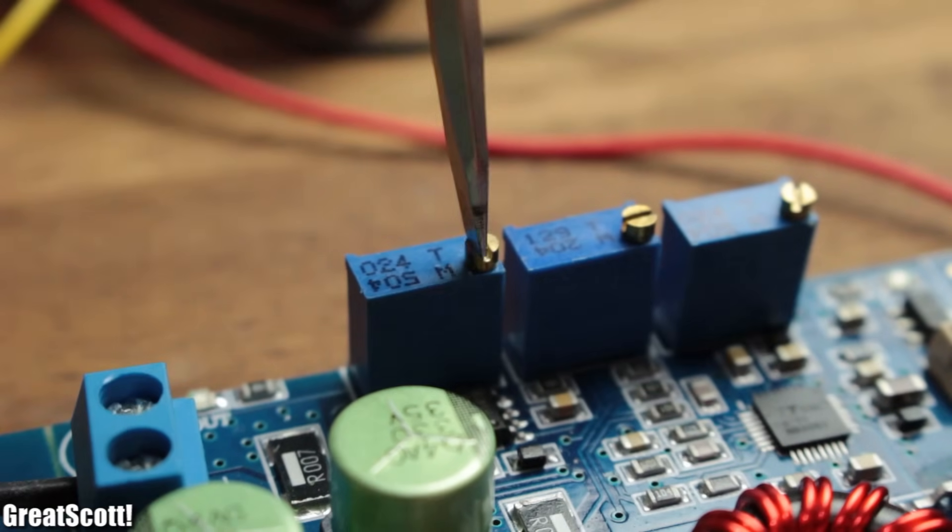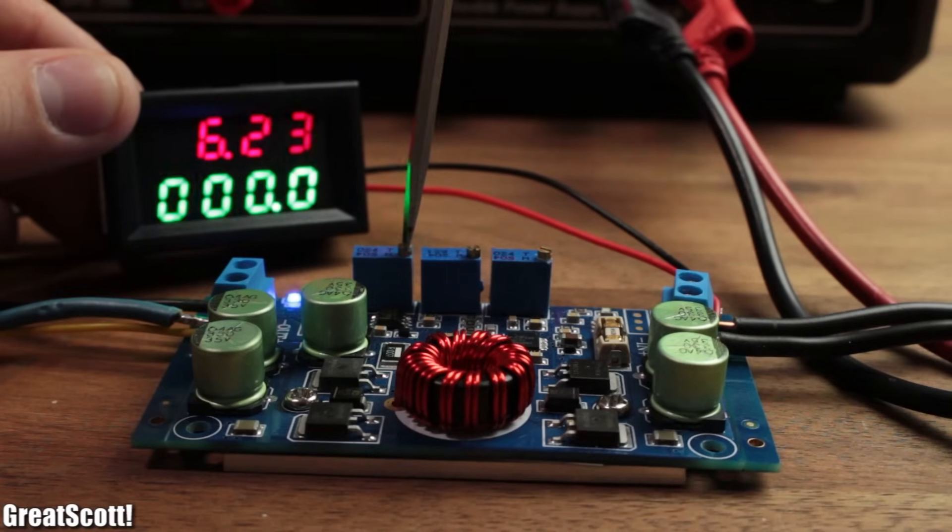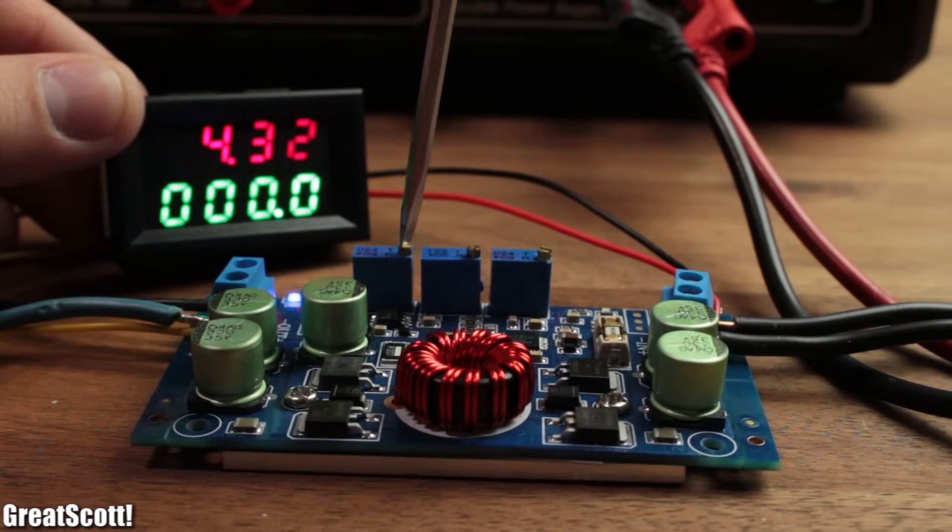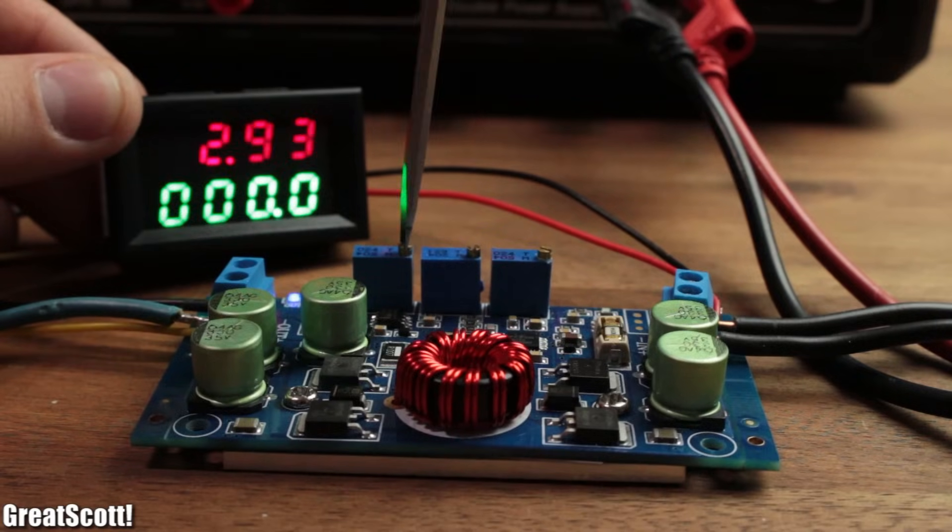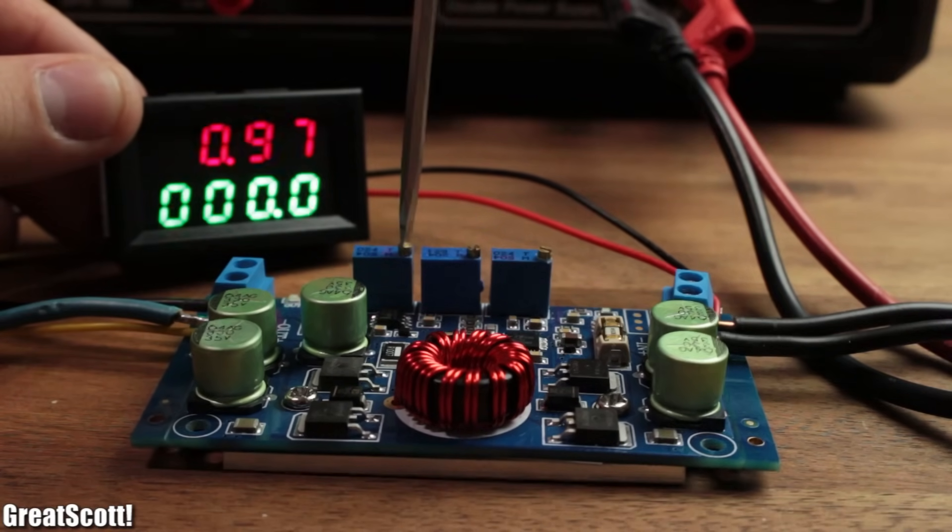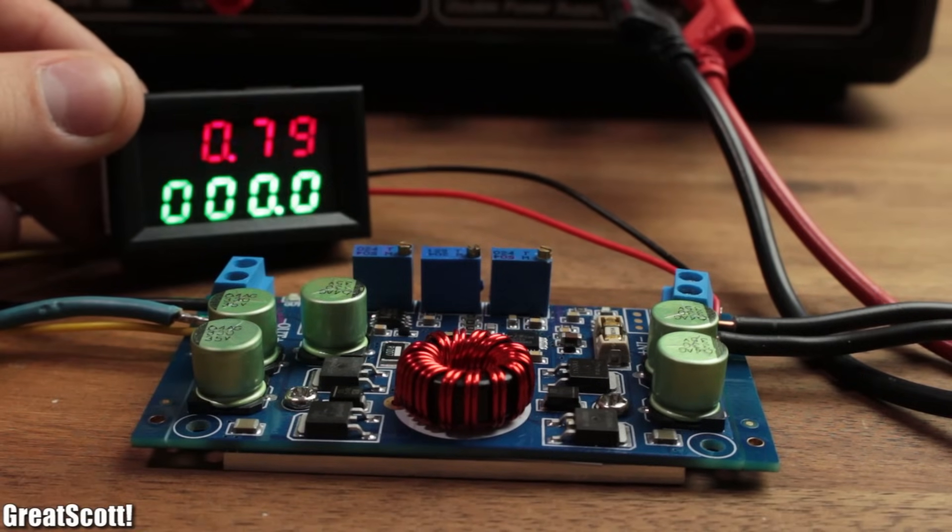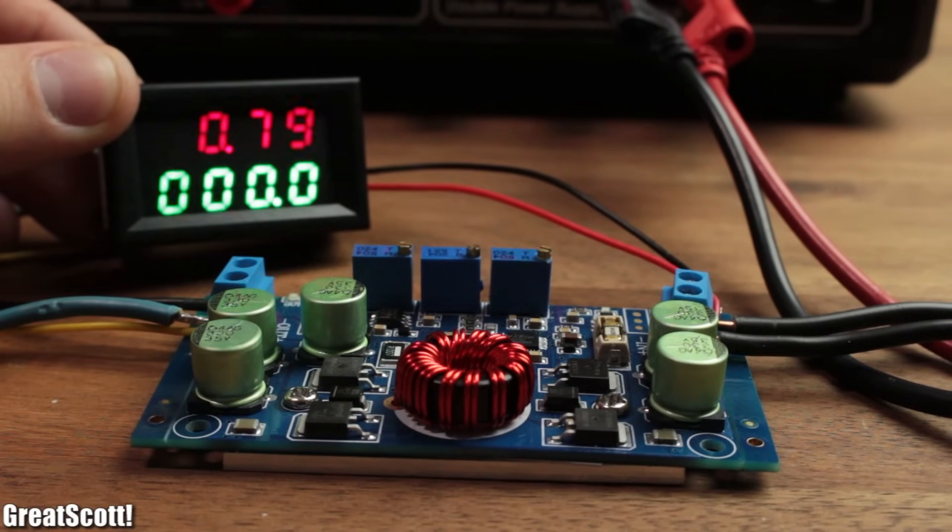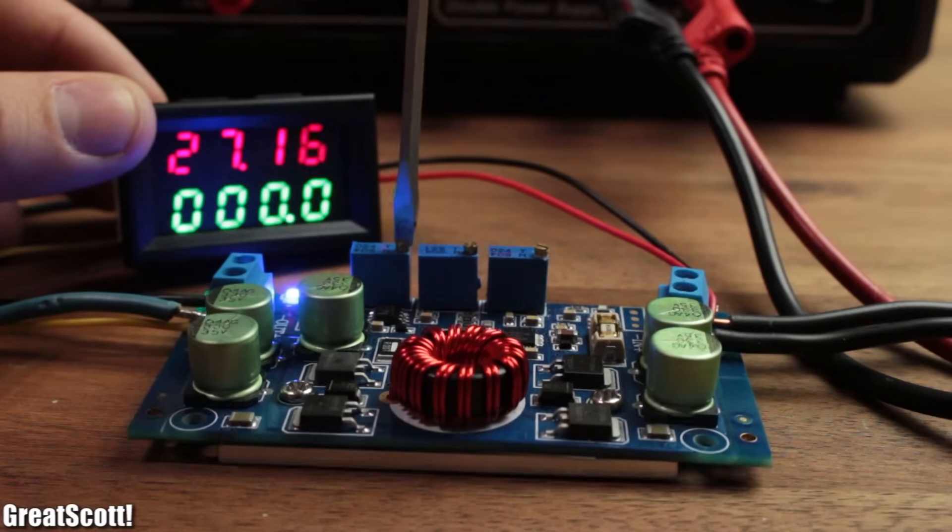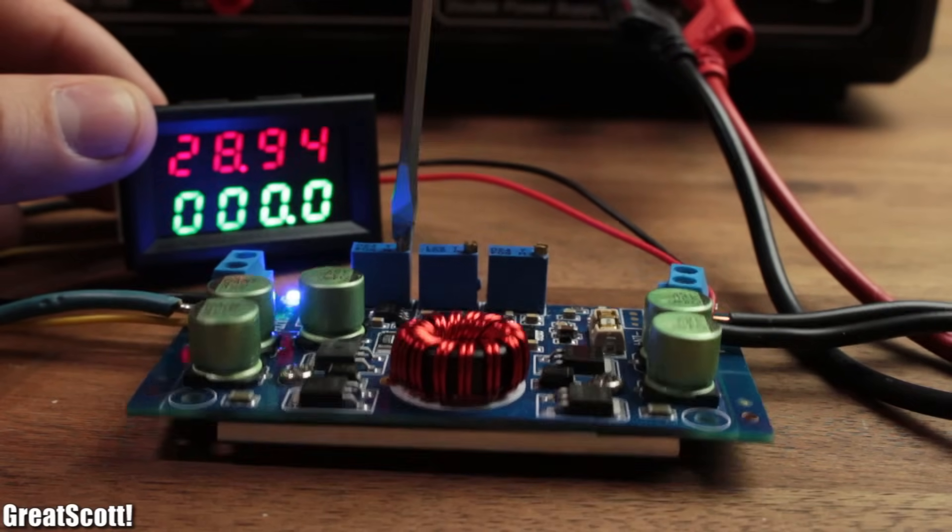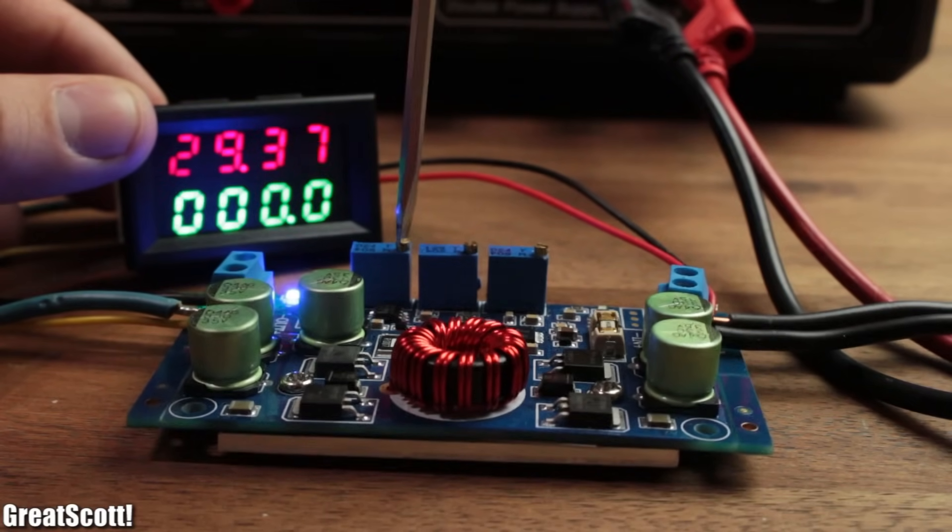The far left one controls our voltage. The minimal voltage is not 0 volts, but it's very close with 0.8 volts. It's not a tragedy that we cannot reach below 0.8 volts, because such low voltage values are not that useful anyway. The maximum voltage is around 29.4 volts, so I would say it's a pretty neat range.